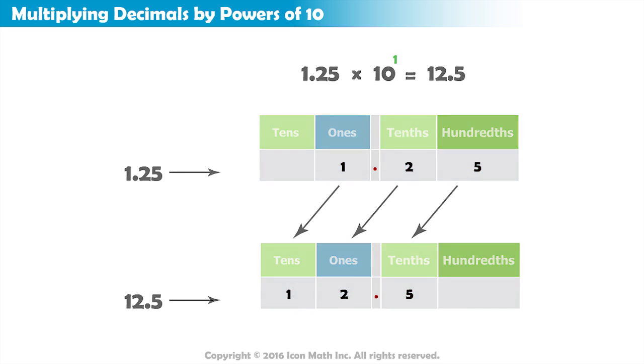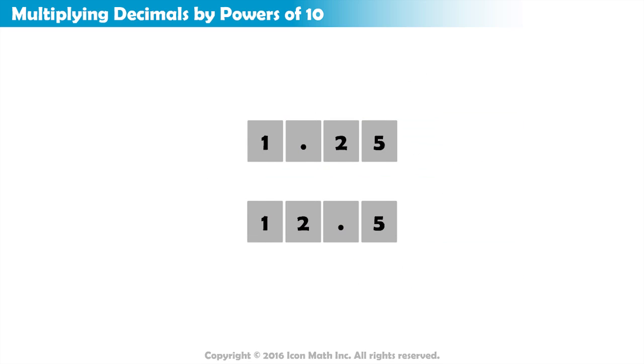Also, we can view this simply as a movement of the decimal point, one place to the right, in the original number.